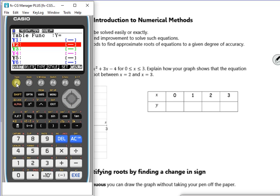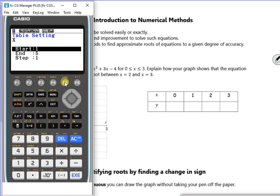Right, so we've got, let's put the equation in, so it's x cubed. So x power 3, press to the right, minus 3x squared plus 3x minus 4. So into the equation, if I do F5 for set, now this table starts at 0, it goes up to 3, and the x value jumps up in 1s. So the step is 1.